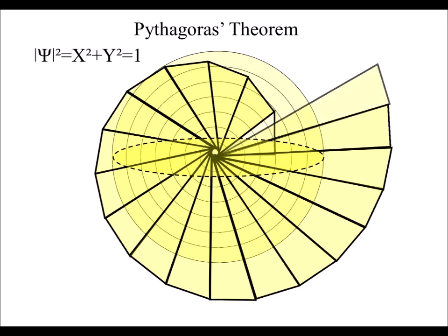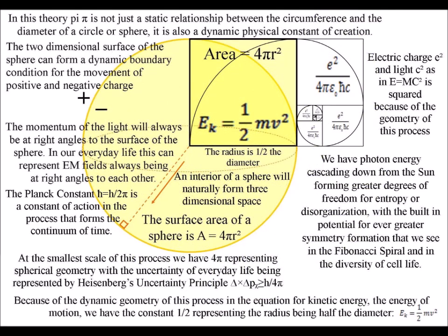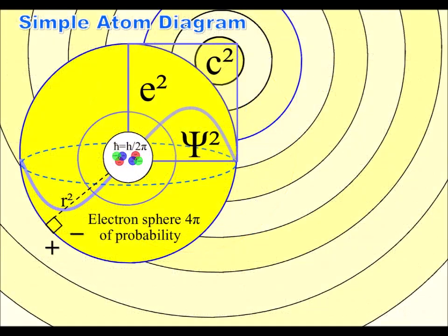This is a process of spherical symmetry forming and breaking that forms the imperfect, broken symmetry of everyday life. In this theory, the atoms are standing waves in time.